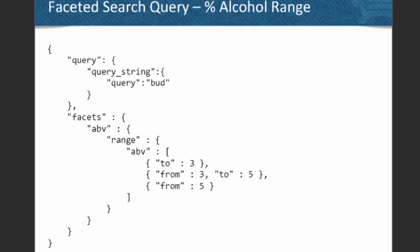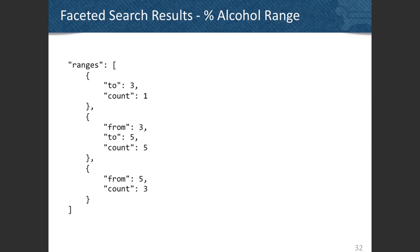The next example is the percent alcohol range. All the values have a floating point ABV field. I've defined three ranges corresponding to low, medium, and high alcohol content. It's as simple as specifying ranges like 0-3, 3-5, and anything above 5 — just telling it the ABV field and providing those ranges. Running this query gives us counts within each alcohol range.